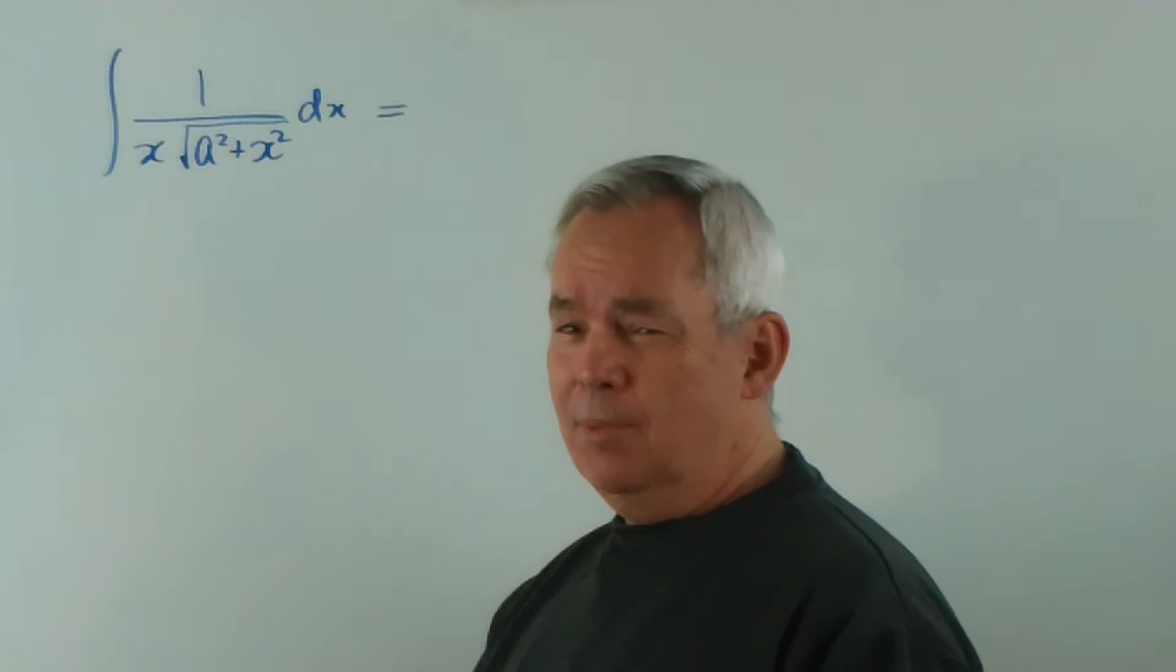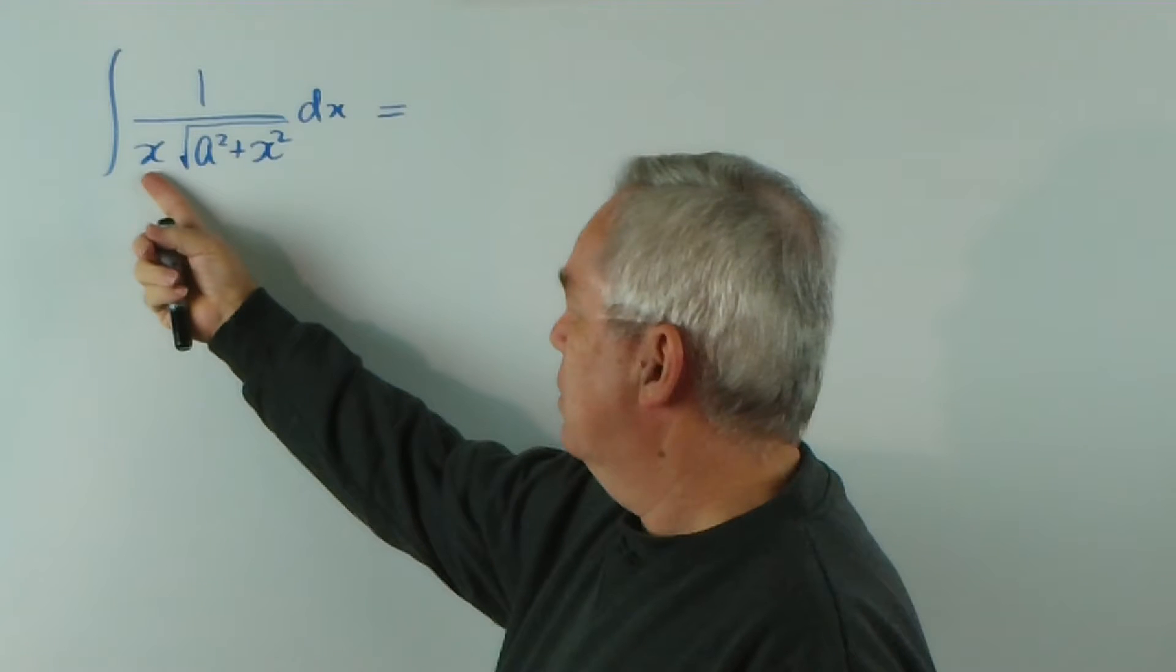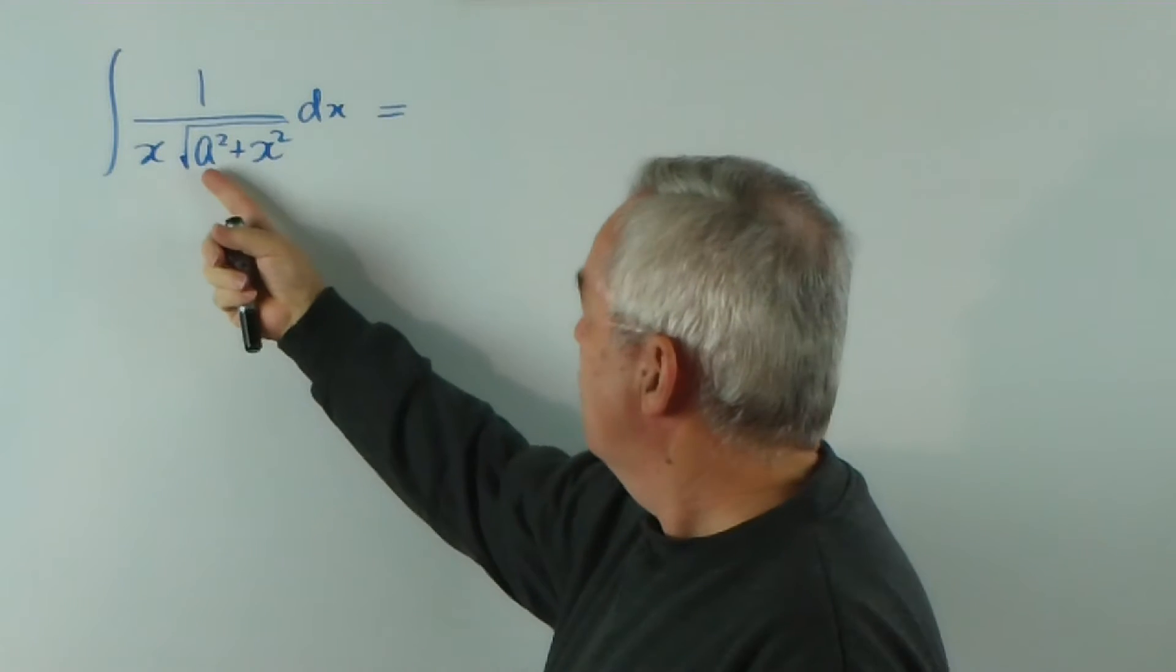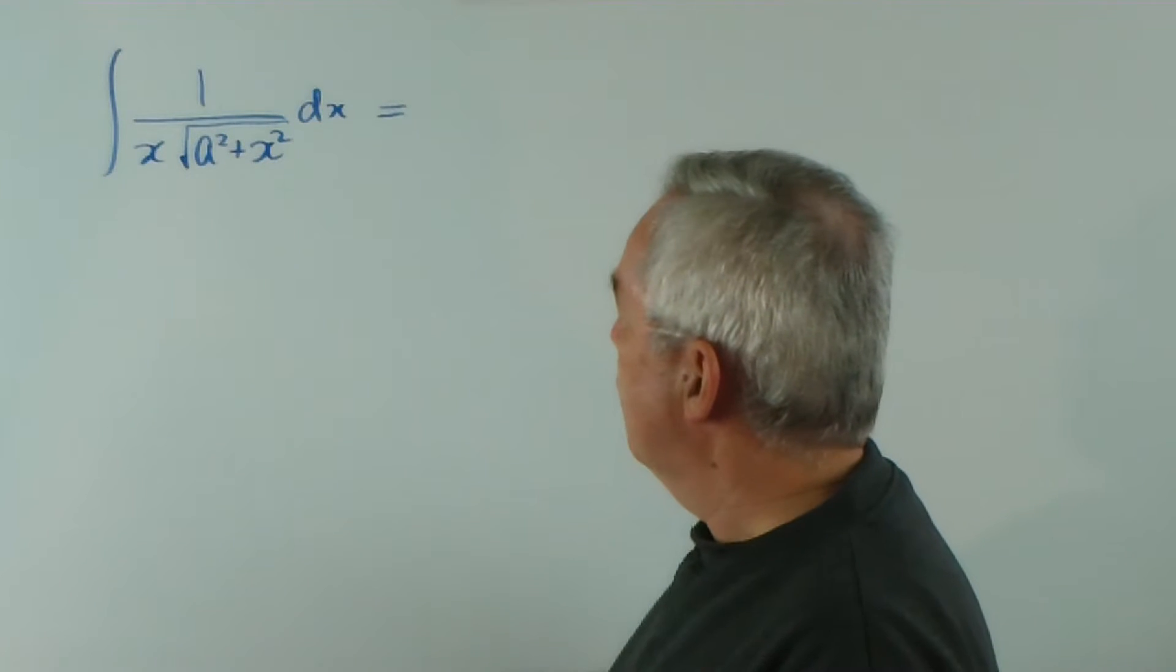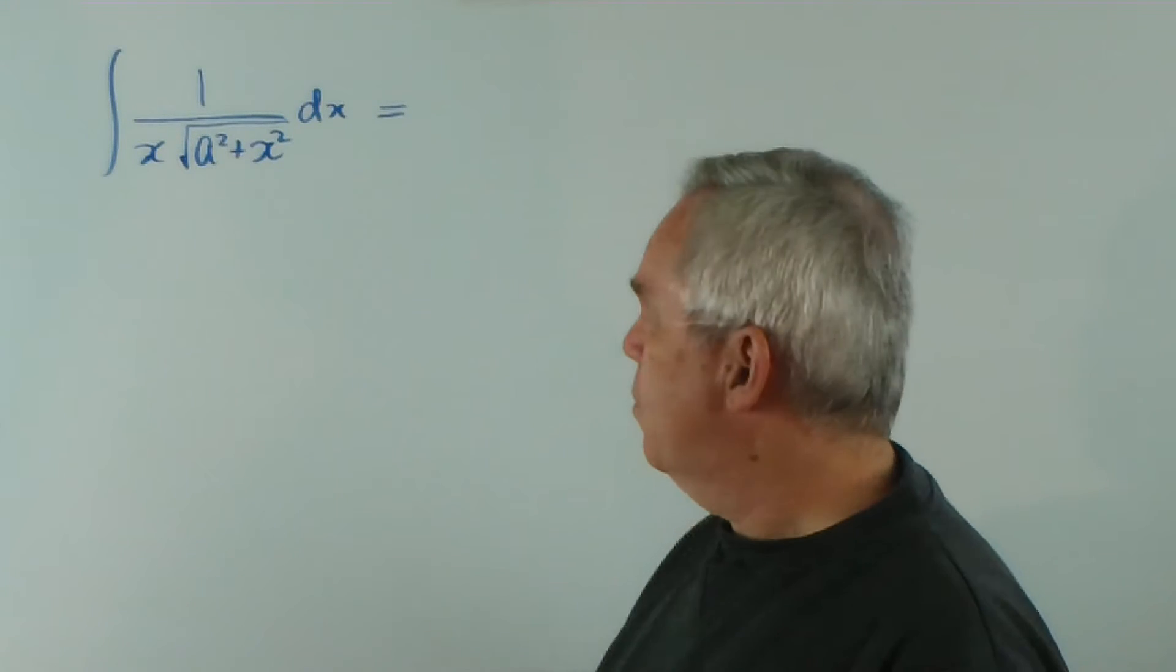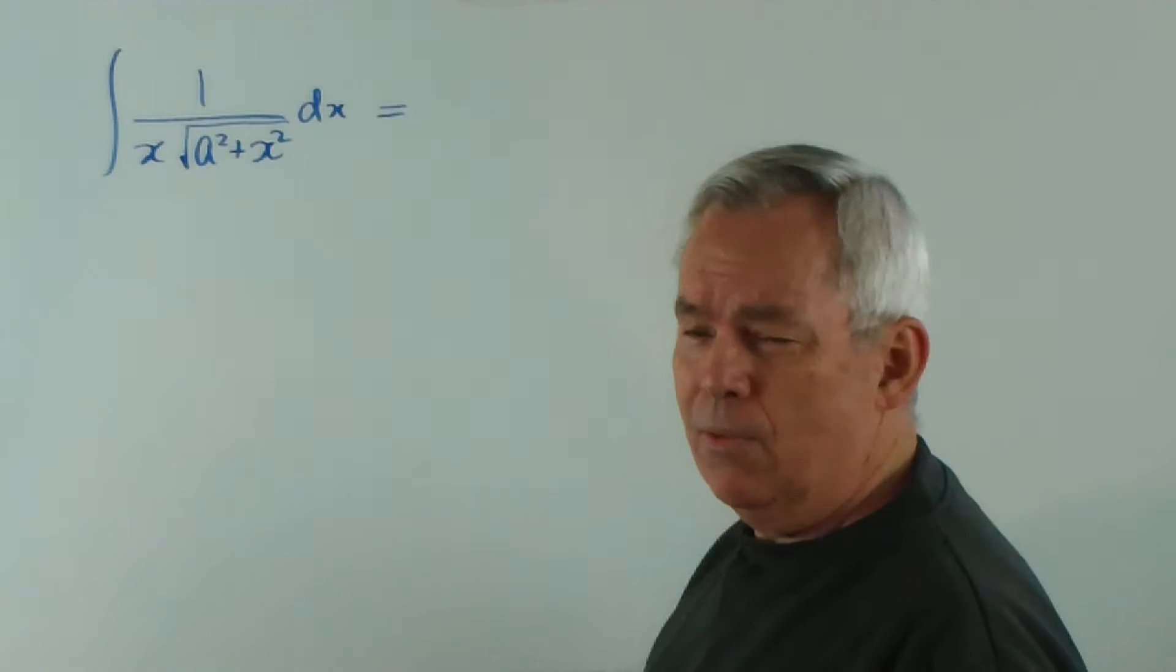First it starts very similarly to the previous one, where we had X, or I think in the previous one it was X-cubed out the front, and a radical with some expression for X, a quadratic inside. And traditionally we would resolve this using a trigonometric substitution to get rid of the radical.